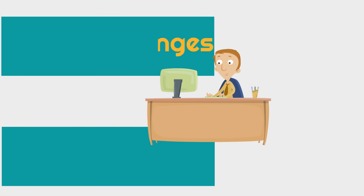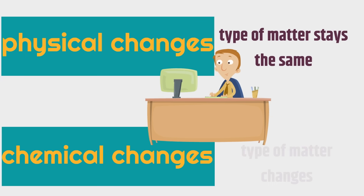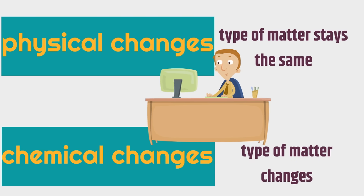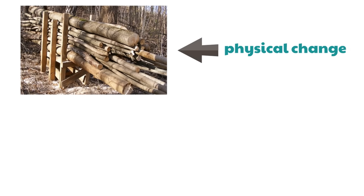Remember, with physical changes the type of matter stays the same, and with chemical changes the type of matter changes. Here we have a picture of some huge logs — trees were cut down to make these logs. When the trees were cut, was that a physical or a chemical change? Yeah, a physical change, because the type of matter — which is the wood — did not change. The type of matter did not change, so it was a physical change.